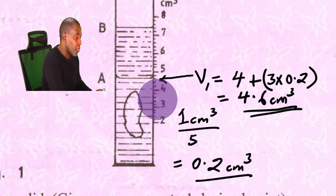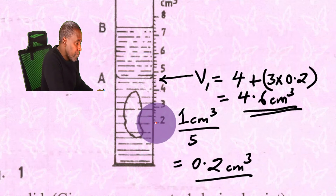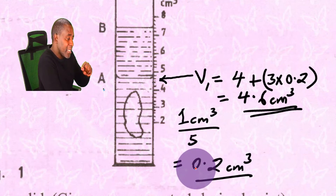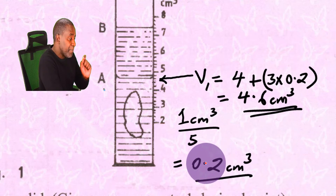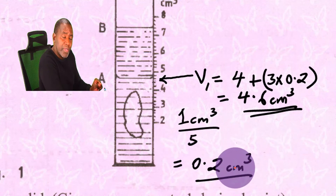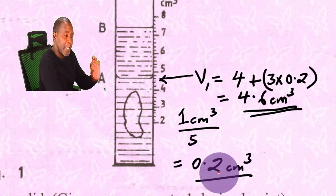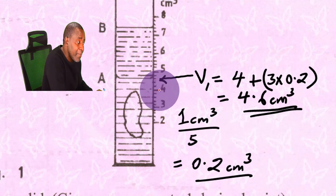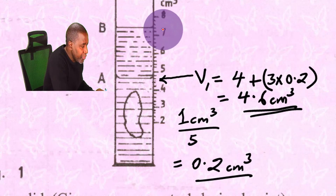Another method is to count mentally in steps of 0.2. The mistake students make is to assume every count is 0.1 — don't make that mistake. Always count in steps of the value you calculated for one division. So counting up: 4.2, 4.4, 4.6 — and you get V1 = 4.6 cm³.